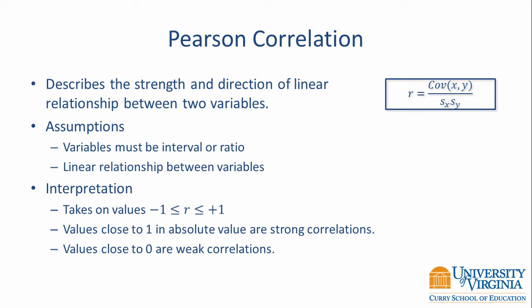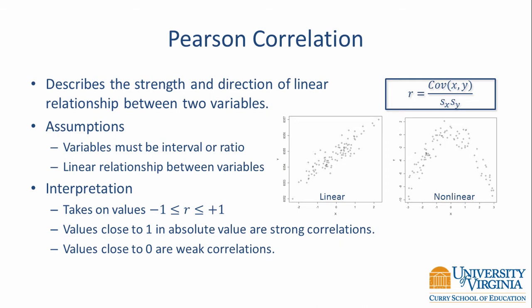This correlation describes the strength and direction of a linear relationship between two variables. It's computed by taking the covariance of two variables and dividing it by the product of their standard deviations. It requires two assumptions: the variables must be interval or ratio, and there must be a linear relationship between the two variables. This correlation doesn't work well if you have a curvilinear relationship.